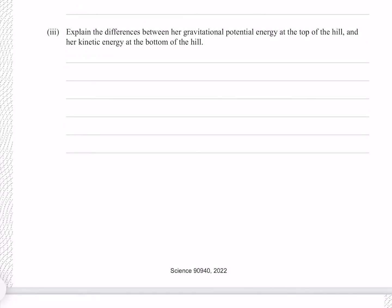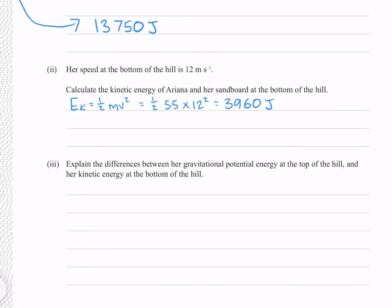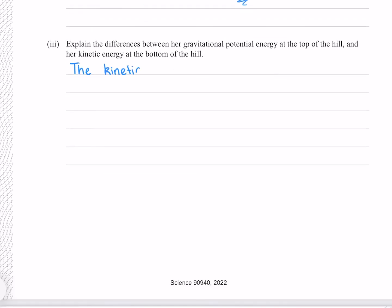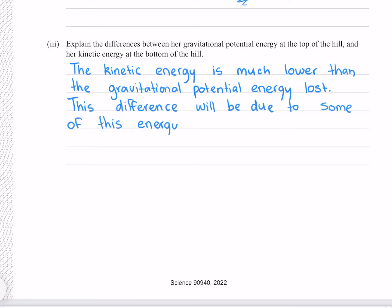Explain the differences between her gravitational potential energy at the top of the hill and her kinetic energy at the bottom of the hill. And so we see that our kinetic energy at the bottom of the hill is much lower than the gravitational potential energy she had at the top. This difference is going to be due to the friction losses between the sand and the board. The kinetic energy is much lower than the gravitational potential energy lost. This difference will be due to some of this energy being converted into heat and sound, via the friction between the sand and the board.